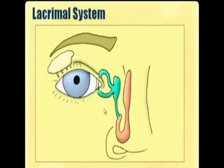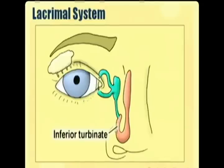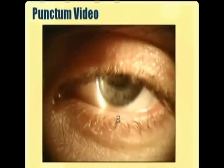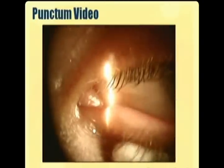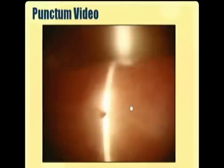The lacrimal system controls tear production and drainage. The majority of tears are produced by accessory glands in the fornix, but reflex tearing is produced by the lacrimal gland in the corner, which shoots tears into the tear film. Tears then drain out through small puncta, down a canalicular system into a sac, and then down the nasolacrimal duct into the inferior meatus underneath the inferior turbinate. Here's a video showing what the puncta look like — they're very small, with one on the bottom and one on top.